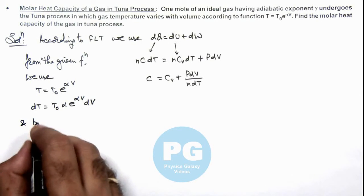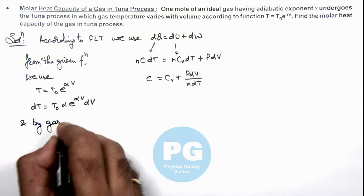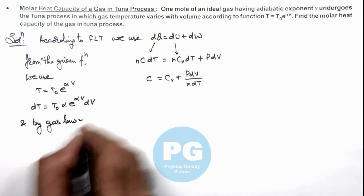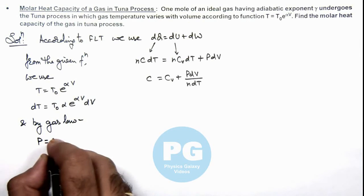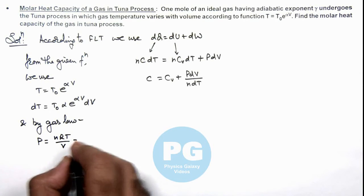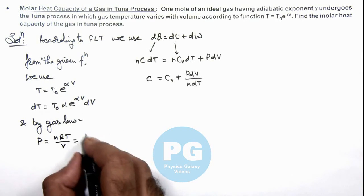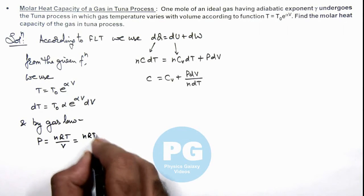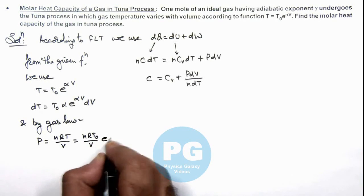We can write by gas law, pressure of gas as P = nRT/V. So in this situation we can substitute the value of T, so it is P = (nRT₀/V)·e^(αV).